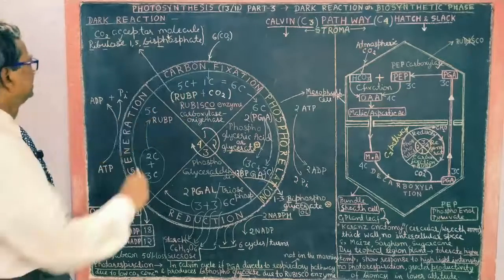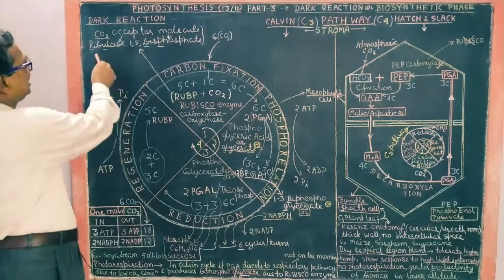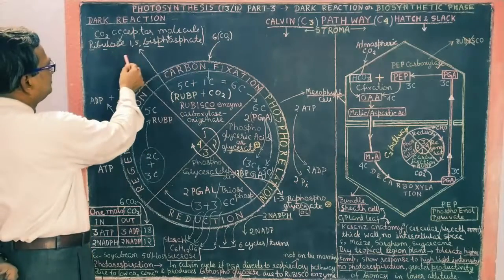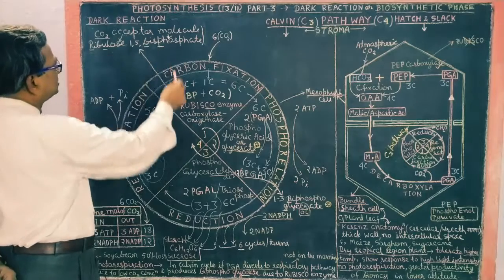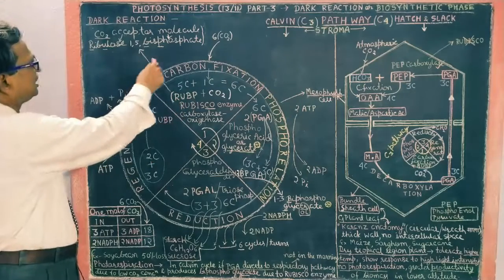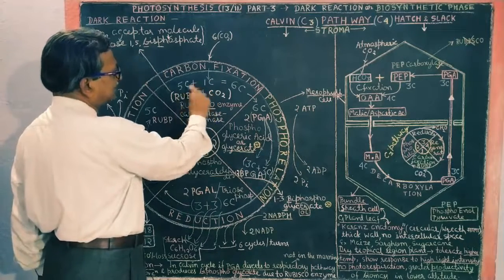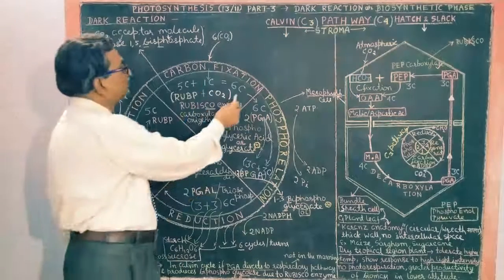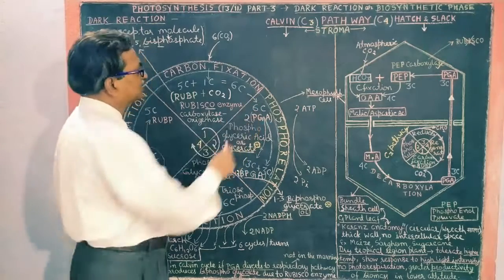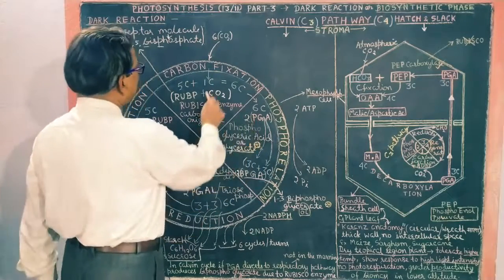First of all, carbon fixation. Atmospheric carbon will combine with RUBP, which is a five carbon compound. Full form of RUBP is ribulose 1,5 bisphosphate. So now it combines with CO2, one carbon molecule, and it becomes 6 carbon molecules, which becomes 2 parts divided into two parts. So 2 PGA becomes, PGA is phosphoglyceric acid.